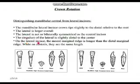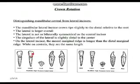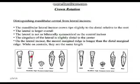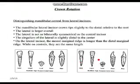On the lateral incisor, the mesial marginal ridge is longer than the distal marginal ridge, while on centrals they are the same length. You can see in the picture that the crown is already rotated, the cingulum is offset to the distal, and the distal marginal ridge is shorter. Mandibular centrals are perfect — straight, with symmetrical angles and equal marginal ridges. Everything is off in the poor laterals.